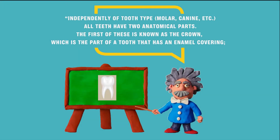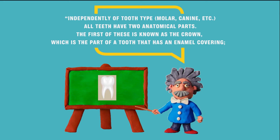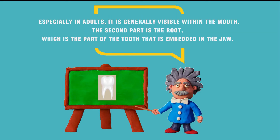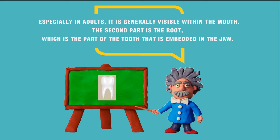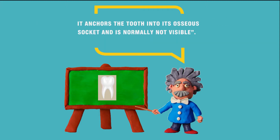Let's look at an example. Imagine you are in a lecture on dental anatomy. The following description is the type of language we would expect as a sample of the discourse genre in that context: Independently of tooth type — molar, canine, etc. — all teeth have two anatomical parts. The first of these is known as the crown, which is the part of a tooth that has an enamel covering. Especially in adults, it is generally visible within the mouth. The second part is a root, which is the part of the tooth that is embedded in the jaw. It anchors the tooth into its osseous socket and is normally not visible.